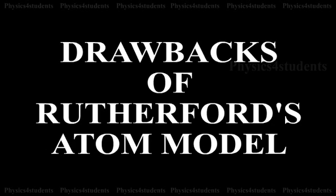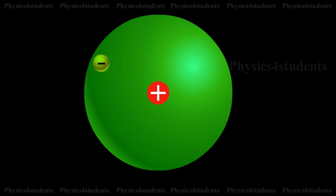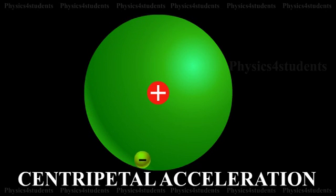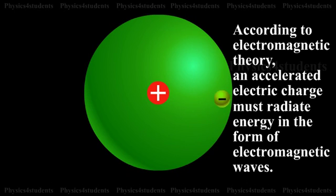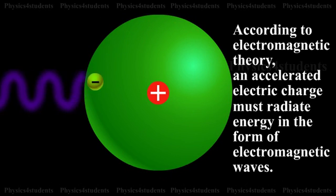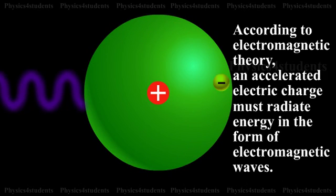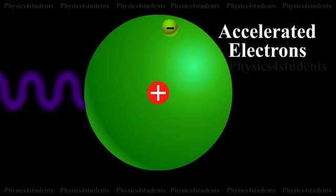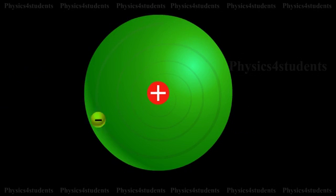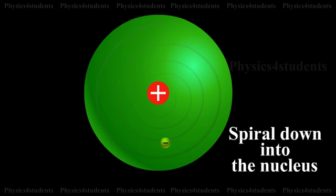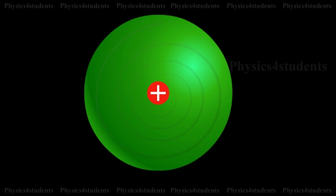We need to assess the drawbacks of Rutherford's atom model. The electron in the circular orbit experiences a centripetal acceleration. According to electromagnetic theory, an accelerated electric charge must radiate energy in the form of electromagnetic waves. Therefore, if the accelerated electrons lose energy by radiation, the energy of the electron continuously decreases and it must spiral down into the nucleus, as shown in the diagram. Thus, the atom cannot be stable.